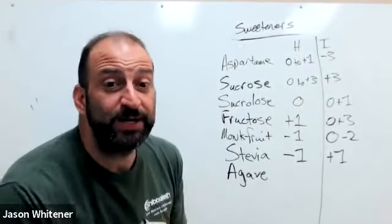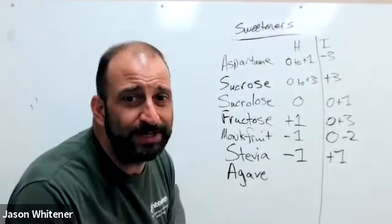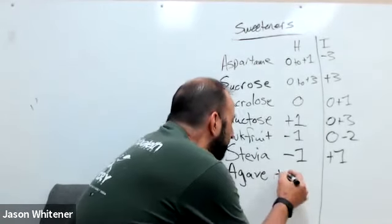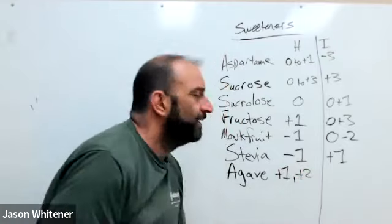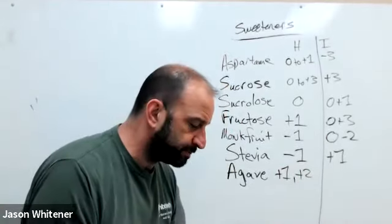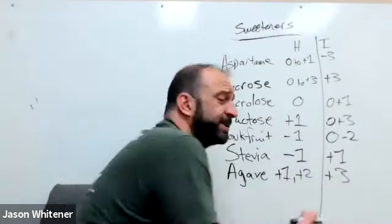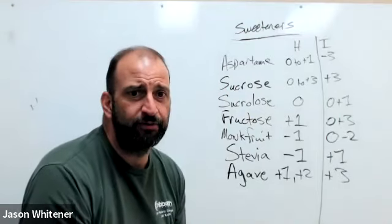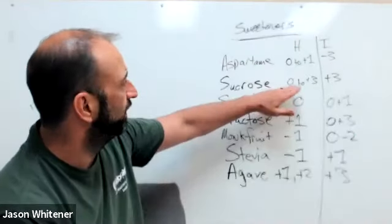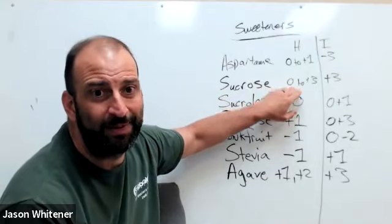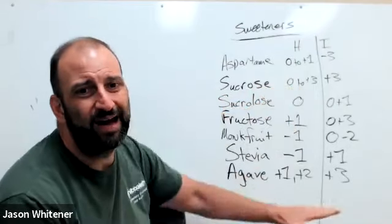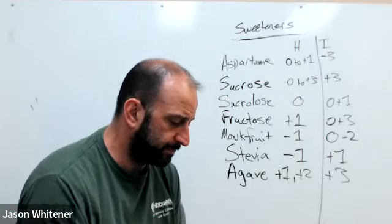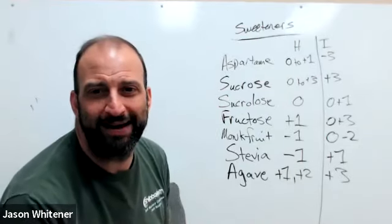In that process of super processing the agave, it's mostly fructose. I'm going to give it a plus one to plus two on the health meter. Not good for us. On the insulin meter, a plus three. What does that mean? Stay away from agave. Even table sugar has the ability to not harm us in an unhealthy way. Agave is so processed, we're going to stay away from it.